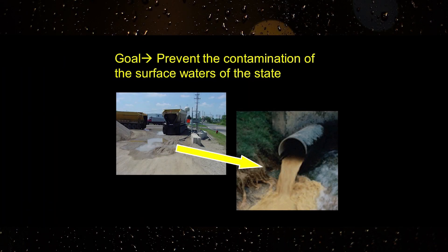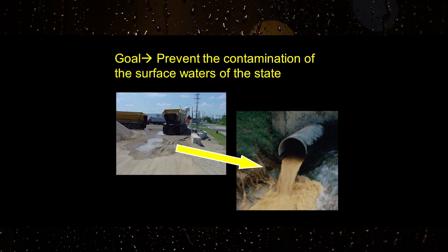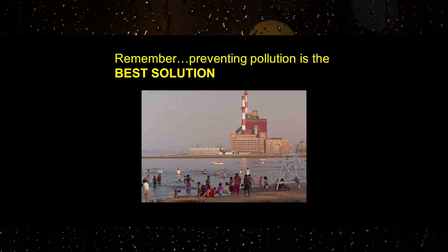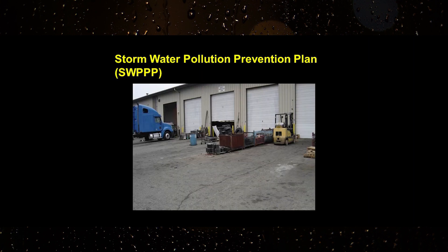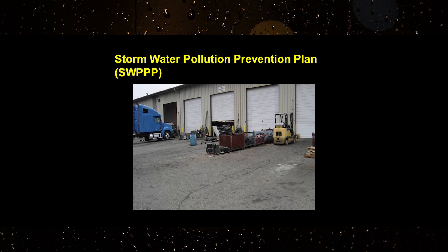The goal of the stormwater pollution prevention plan is to prevent the contamination of surface waters of the state. Remember, preventing pollution is the best solution. Now let's discuss the permit requirements for developing a stormwater pollution prevention plan.